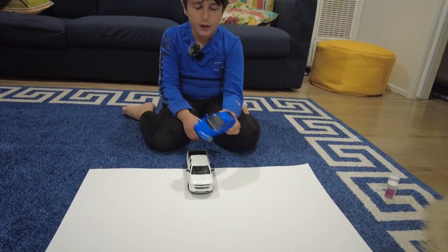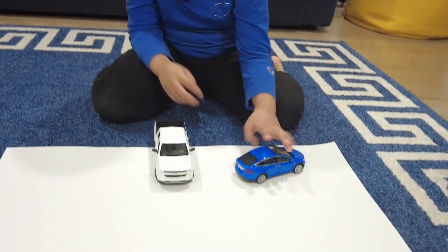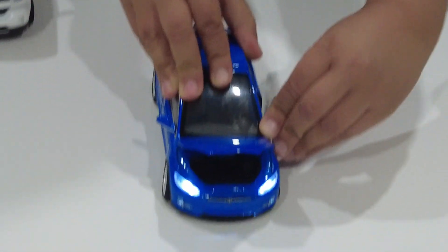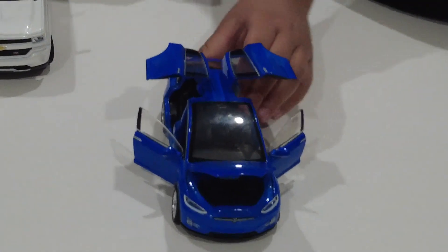So first we'll start off with the Tesla. As you can see, it says Tesla, it has the Tesla logo and it says Model X on the back. We can open all the doors like this. It even has the falcon wing doors.